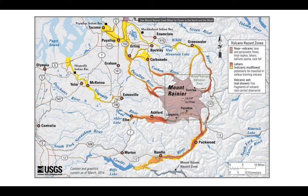These hazards follow the natural topography, so using precise measurements of slope, drainage, and potential flow and discharge of material, it is possible to create hazard maps like this one of Mount Rainier by the U.S. Geological Survey.